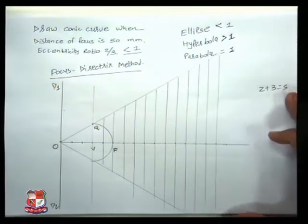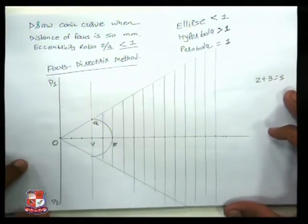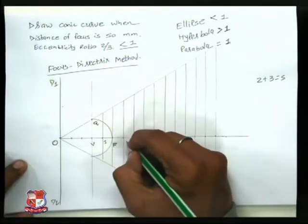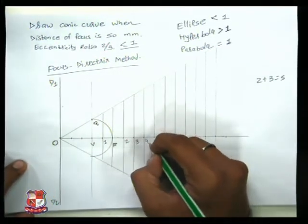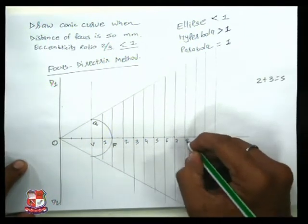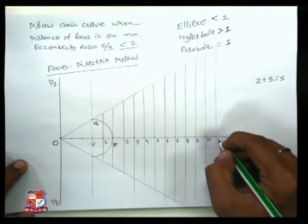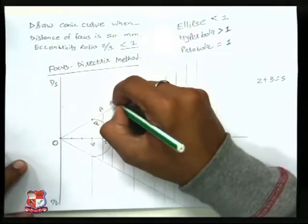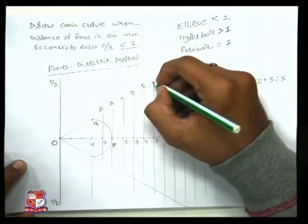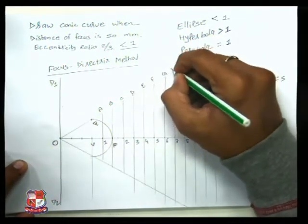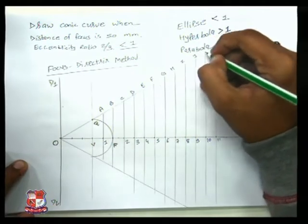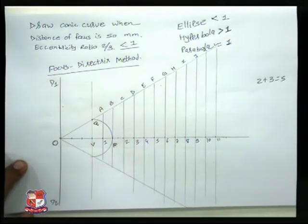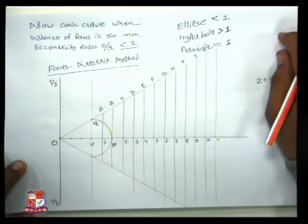Give the name to the same: 1, 2, 3, 4, 5, 6, 7, 8, 9, 10, 11 on the upper side — a, b, c, d, e, f, g, h, i, j, k, and l. We have given the nomenclature on both sides now.